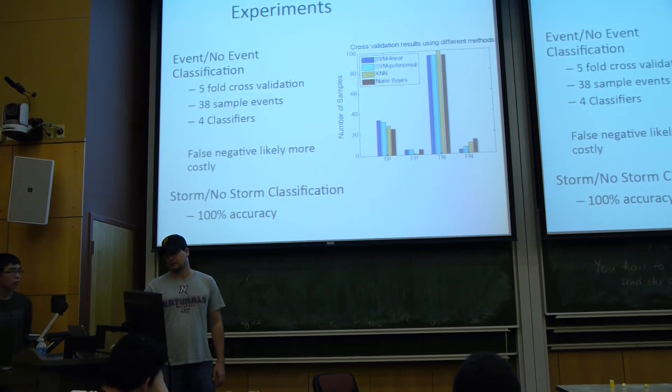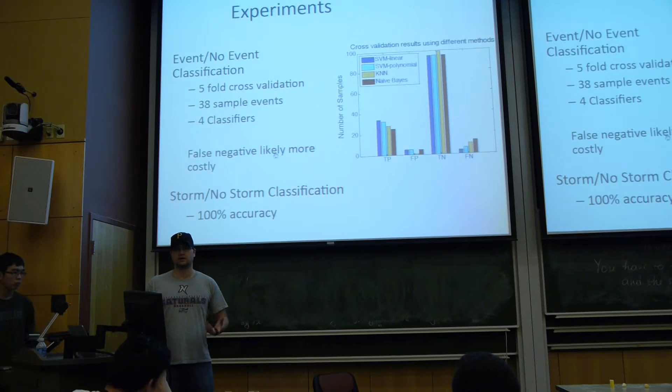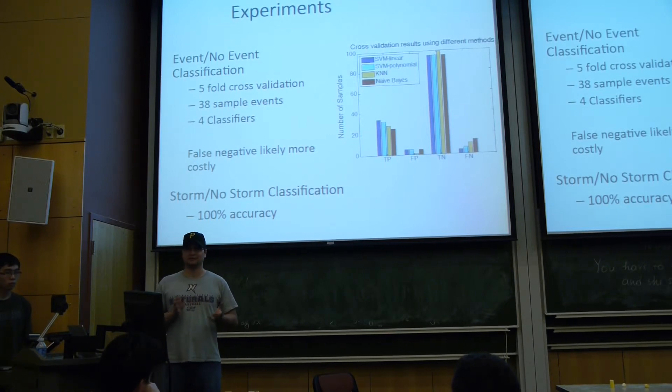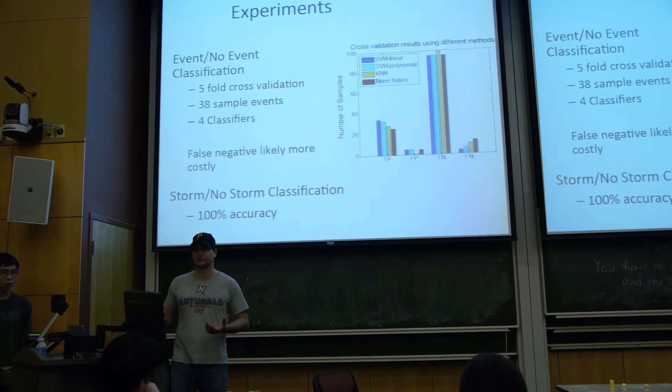One thing of note here is that false negatives are likely more costly as we're just trying to reduce a large data set. The storm versus no storm classification, we got 100% accuracy, which may sound great but it's probably not that great because storm events are actually very easily detectable from other means anyway, so it's a less useful thing.